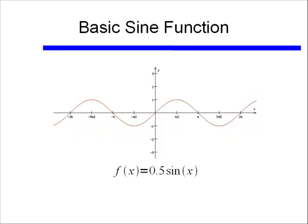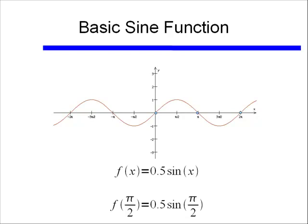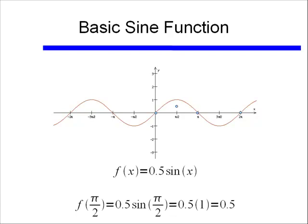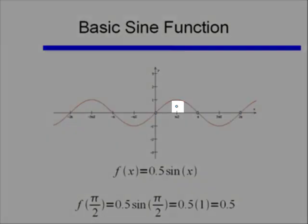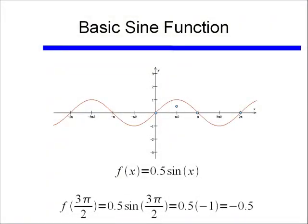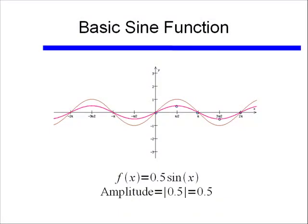What if we look at 0.5 times sine of x? The points that are 0 will still be 0. At π/2, plugging in gives 1/2 times sine of π/2, and since sine of π/2 = 1, the function equals 0.5. At 3π/2, we multiply negative 1 times 0.5 and get negative 0.5. Connecting those dots, the graph of f(x) = 0.5 sine x is contracted. The amplitude is the absolute value of a, which equals 0.5.